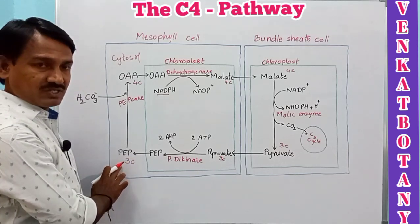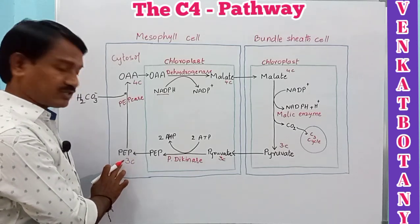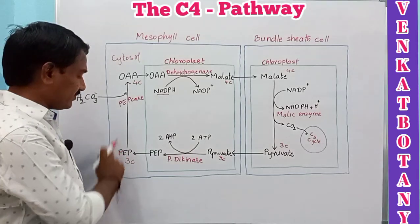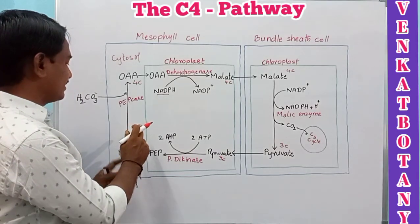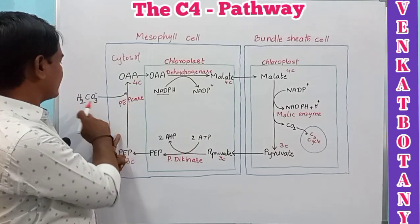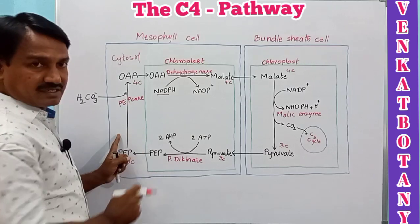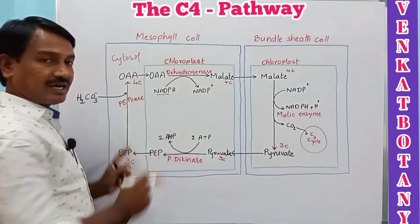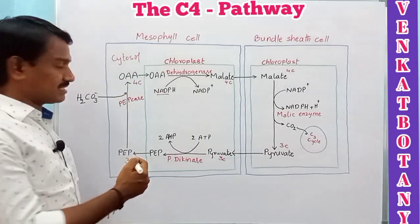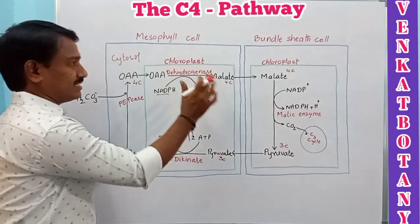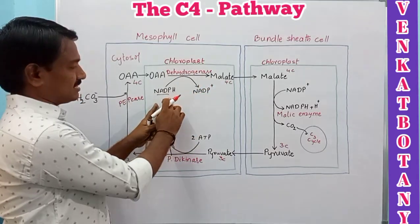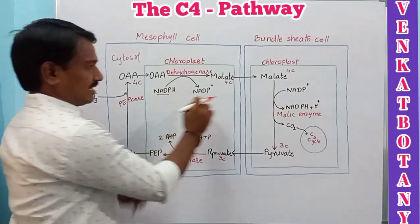The phosphoenolpyruvic acid transfers back to the cytosol of the mesophyll cell, where it again captures CO2 to form oxaloacetic acid. This is a continuous, cyclic process.